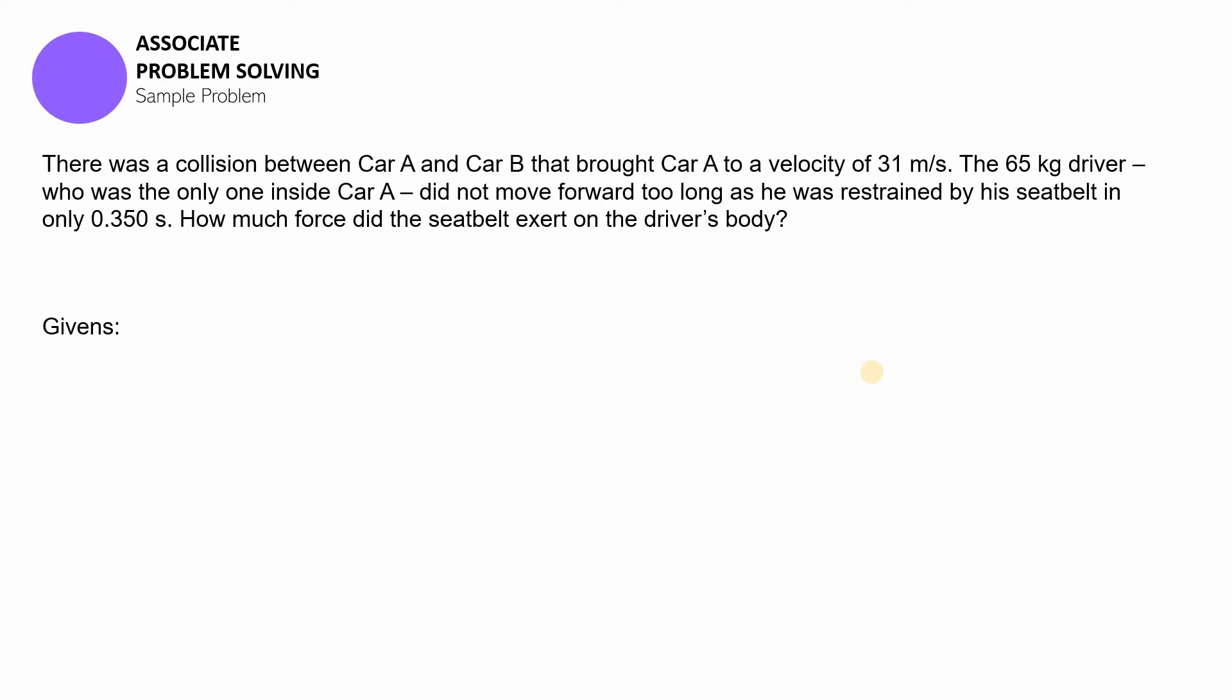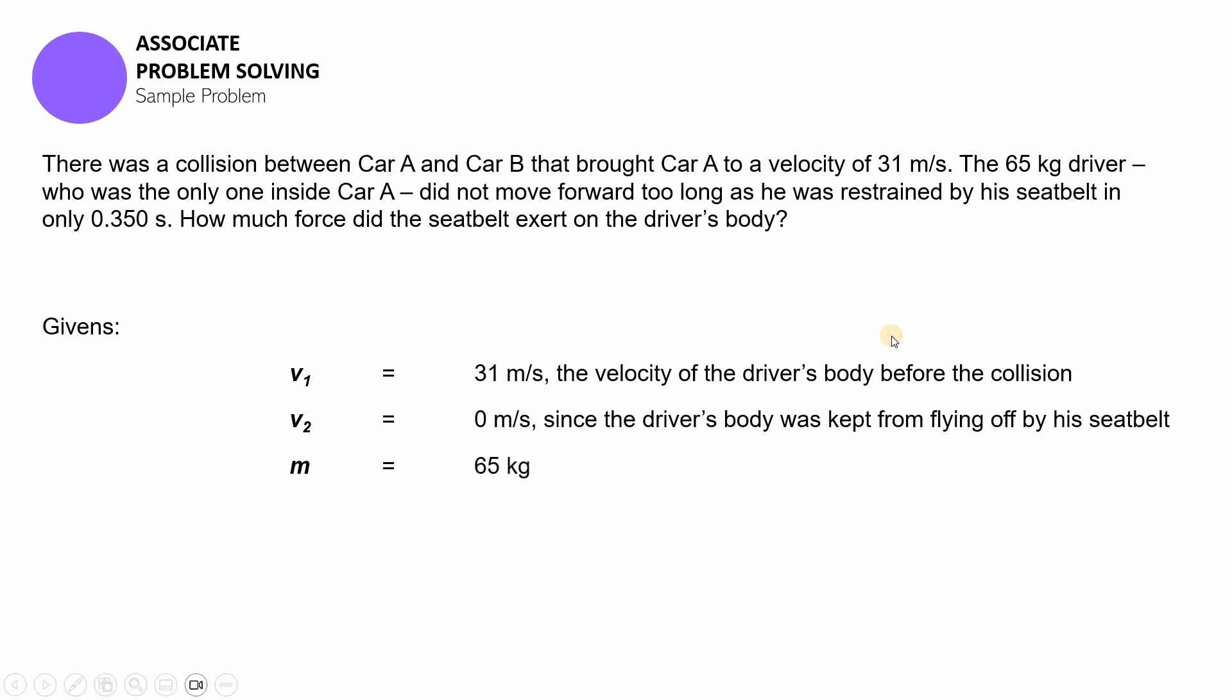So I want you to look at the problem again and list down the givens. If you're done, let us now look at the givens. The velocity of the car before the collision was 31 meters per second, and then its velocity was then zero because it hit another car. And then the mass of the body of the driver is 65 kilograms. So let us always remember that when I said that 31 and 0 are the velocities of the car, we also refer to the velocity of the body.